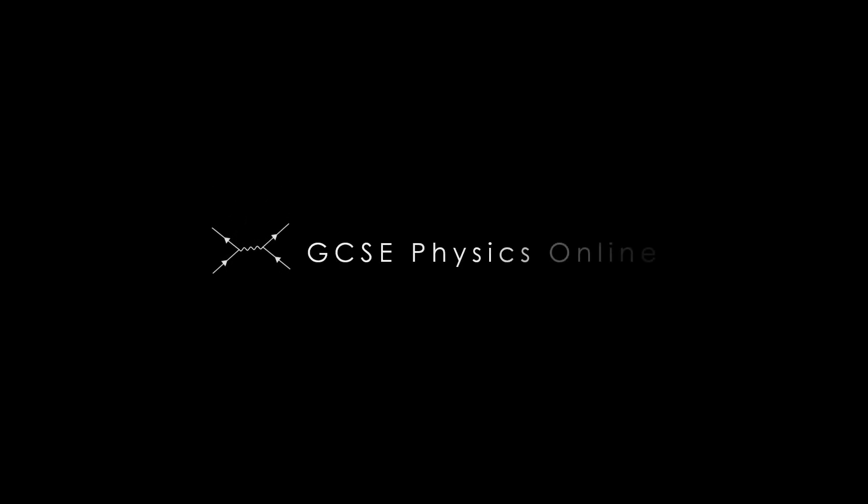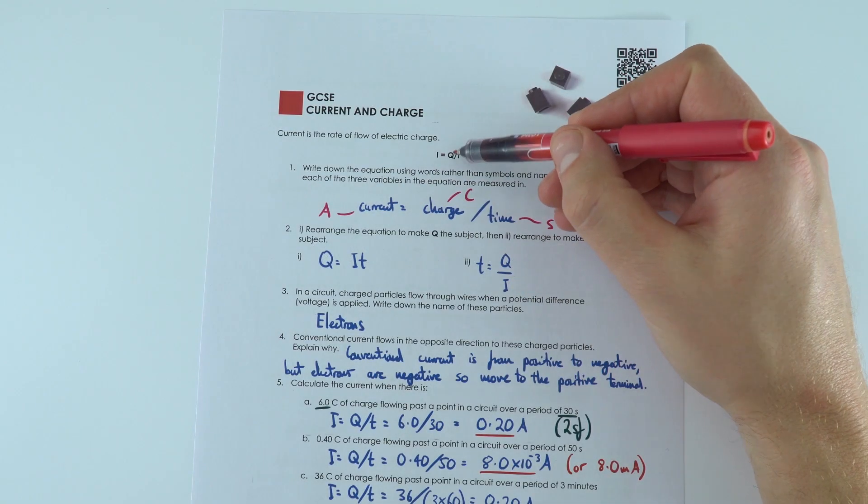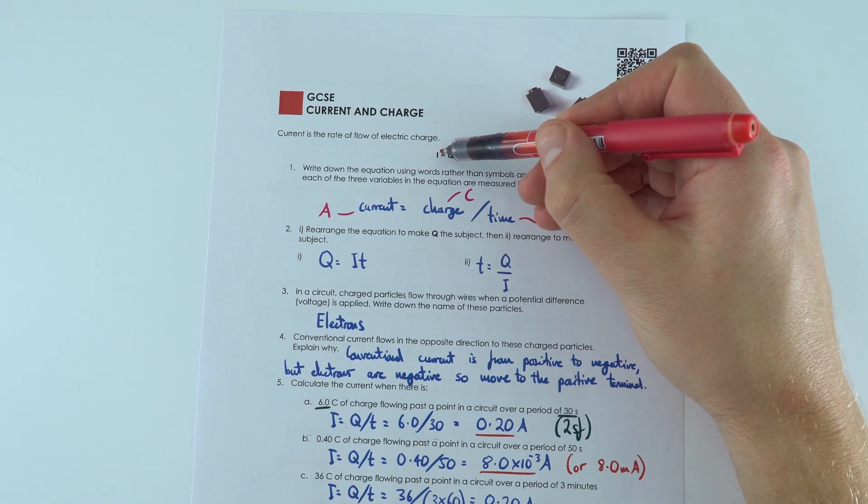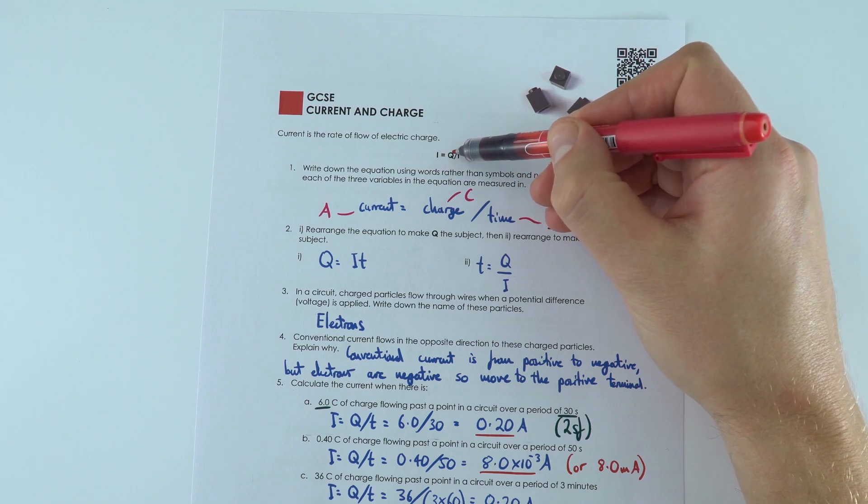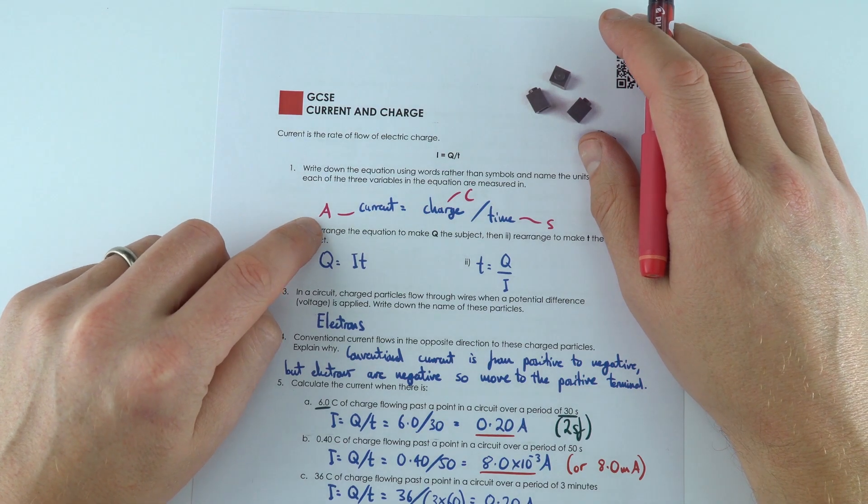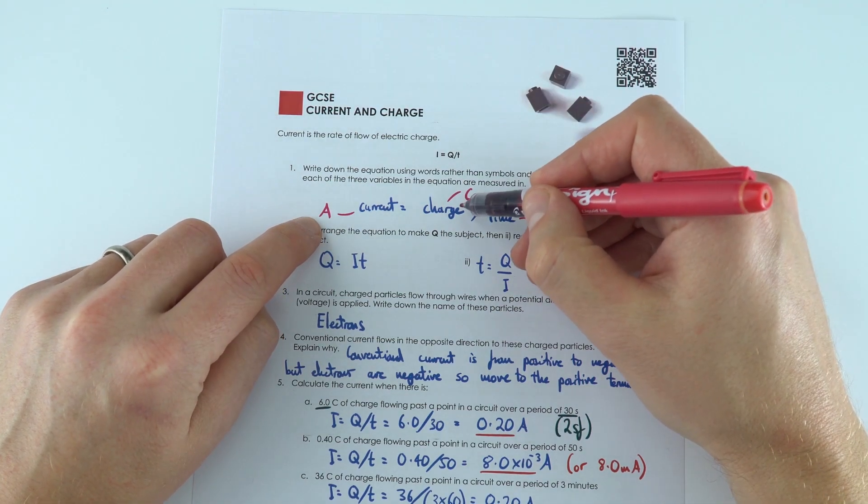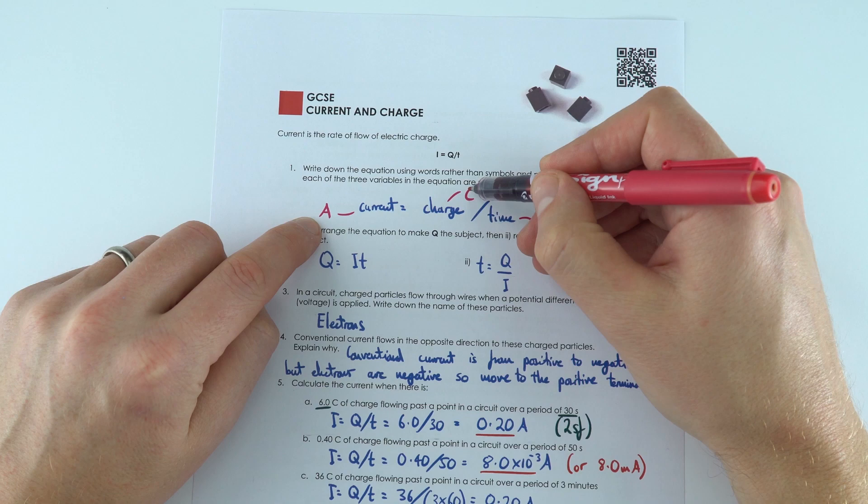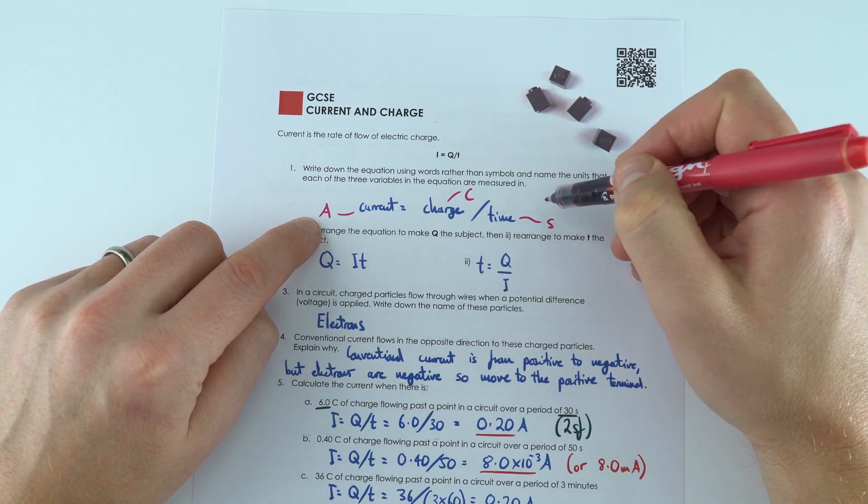Rather confusingly, we use I for current and we use Q for charge. Think of this as the intensity of current and the quantity of charge. Current is measured in amps or amperes, which is a capital A. Charge is measured in coulombs, which is a capital C. And time, as always, is measured in seconds.